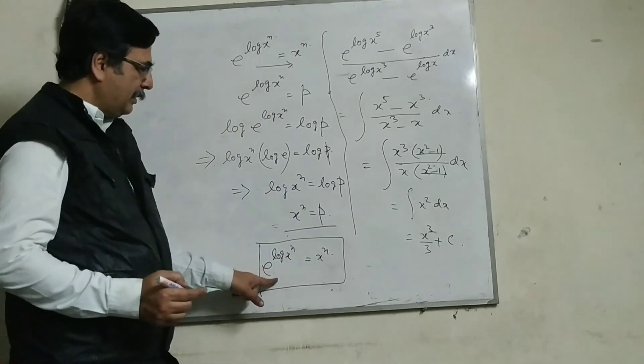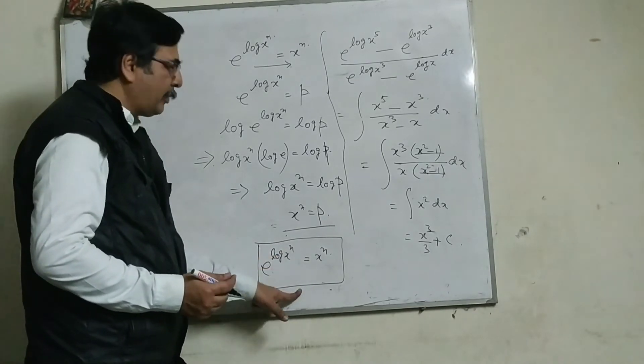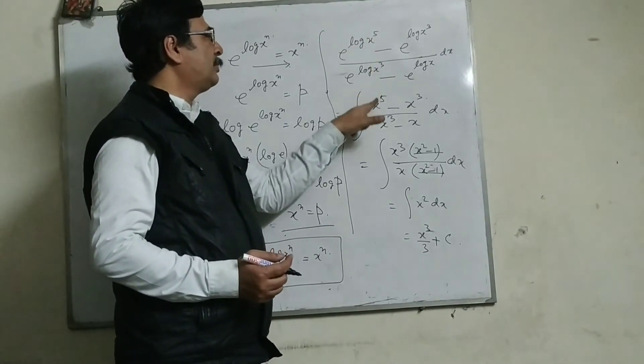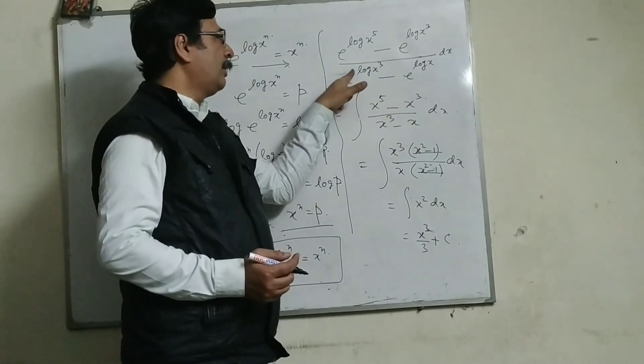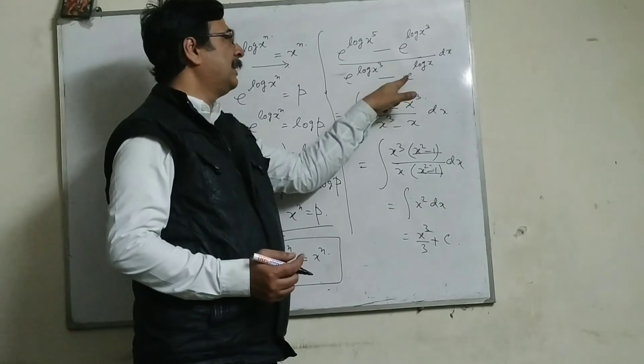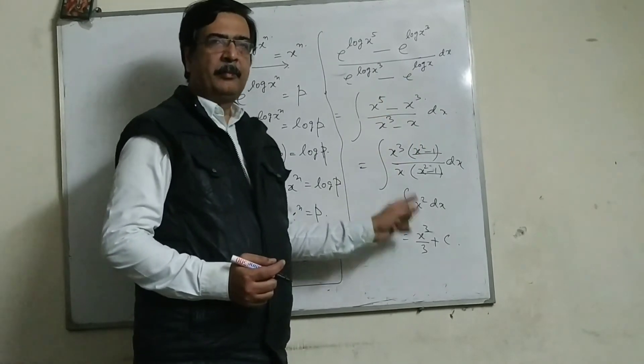And I have used this property, and by using this property I have written e to the power log x to the power 5 as x to the power 5, e to the power log x cube as x cube, e to the power log x cube again x cube, and here e to the power log x as x. Then I have solved this problem in this way.